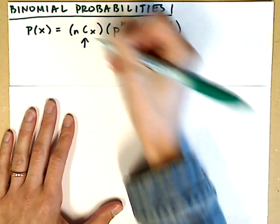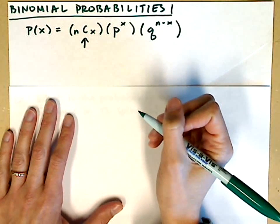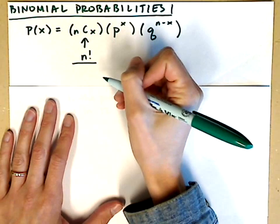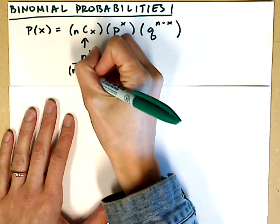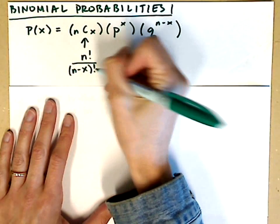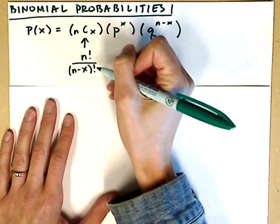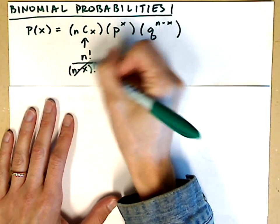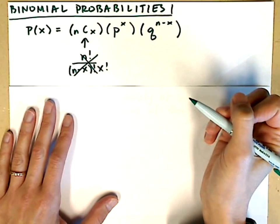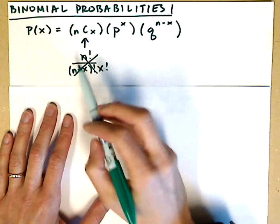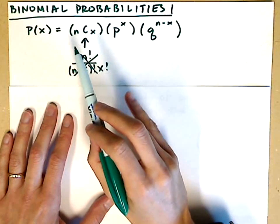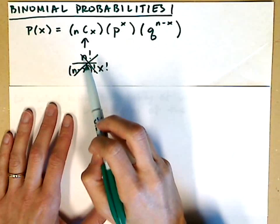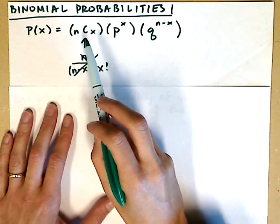In your textbook, you'll see this first piece in parentheses listed as n factorial in the numerator; in the denominator, it's n minus x factorial, followed by x factorial. Don't bother to use this — you could go the long way, but we have the combination formula. So when computing a binomial probability, I use the combination notation, not the factorial notation.